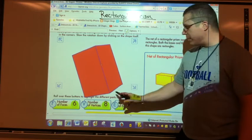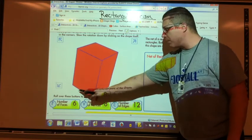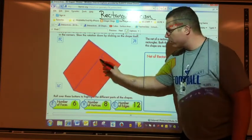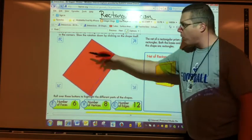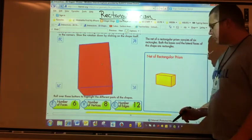Number of vertices, how many corners are there? Four on top: one, two, three, four. Four on the bottom: one, two, three, four. Number of edges or corners, there are twelve. Four along the side, four on the bottom, four on the top. Three sets of four gives you twelve.